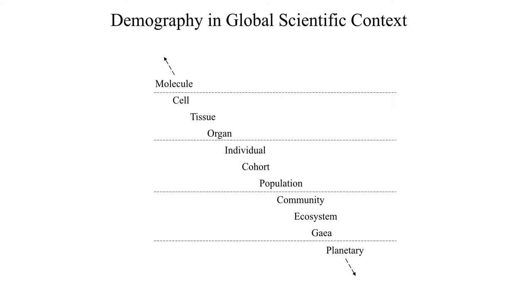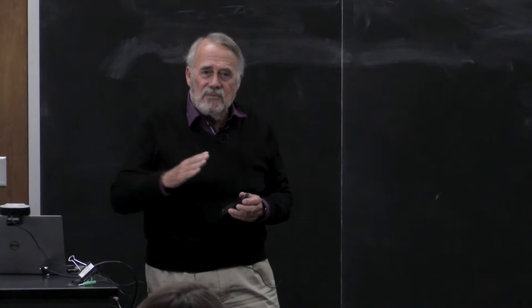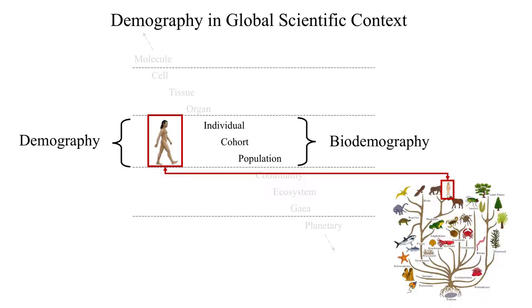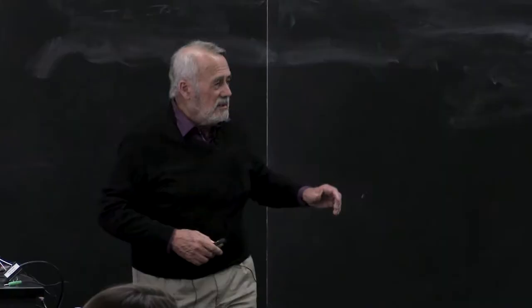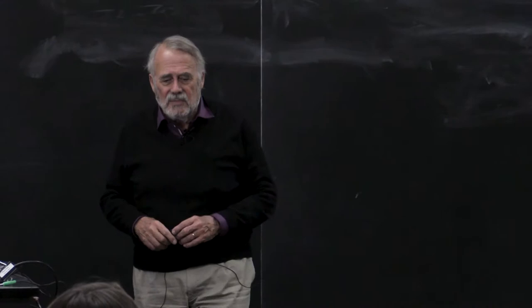If you look at all the layers from atomic and molecular all the way to planetary and beyond, I view demography as what I call 'skin in, skin out.' Skin in is zoology and biology, and skin out is the individual and outward. When you expand to bio-demography, it's basically putting humans into the context of the tree of life — all animals and plants have populations and individuals — taking the same basic principles and applying them across biology writ large.